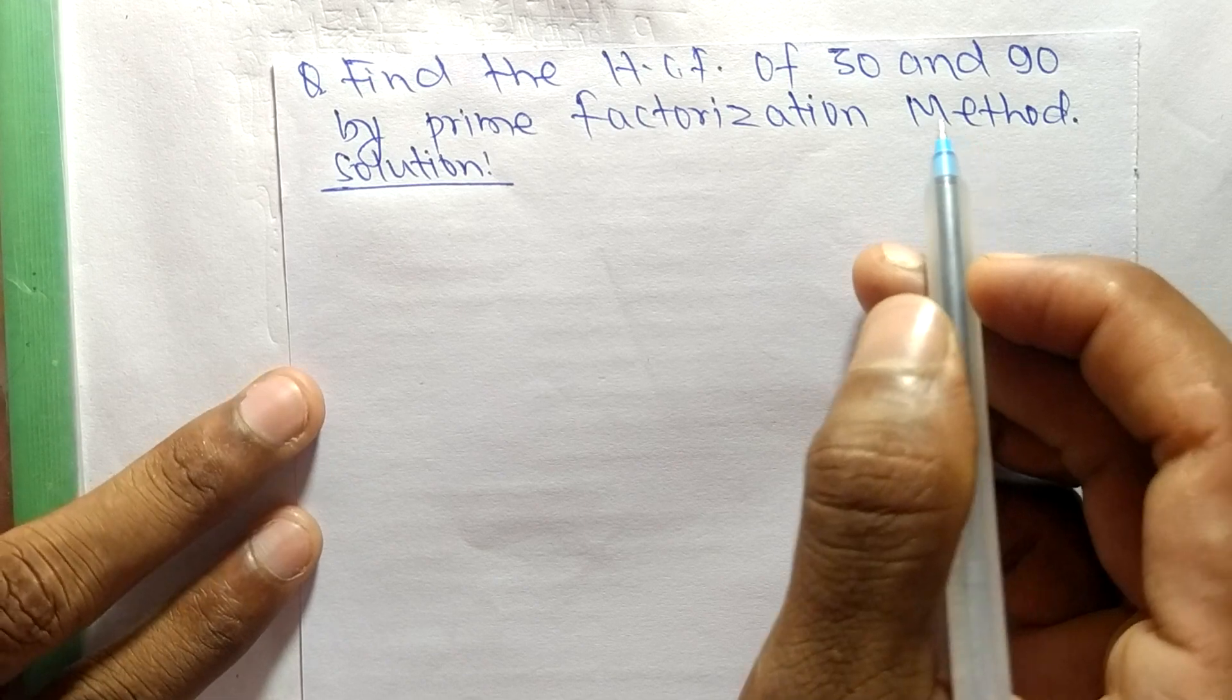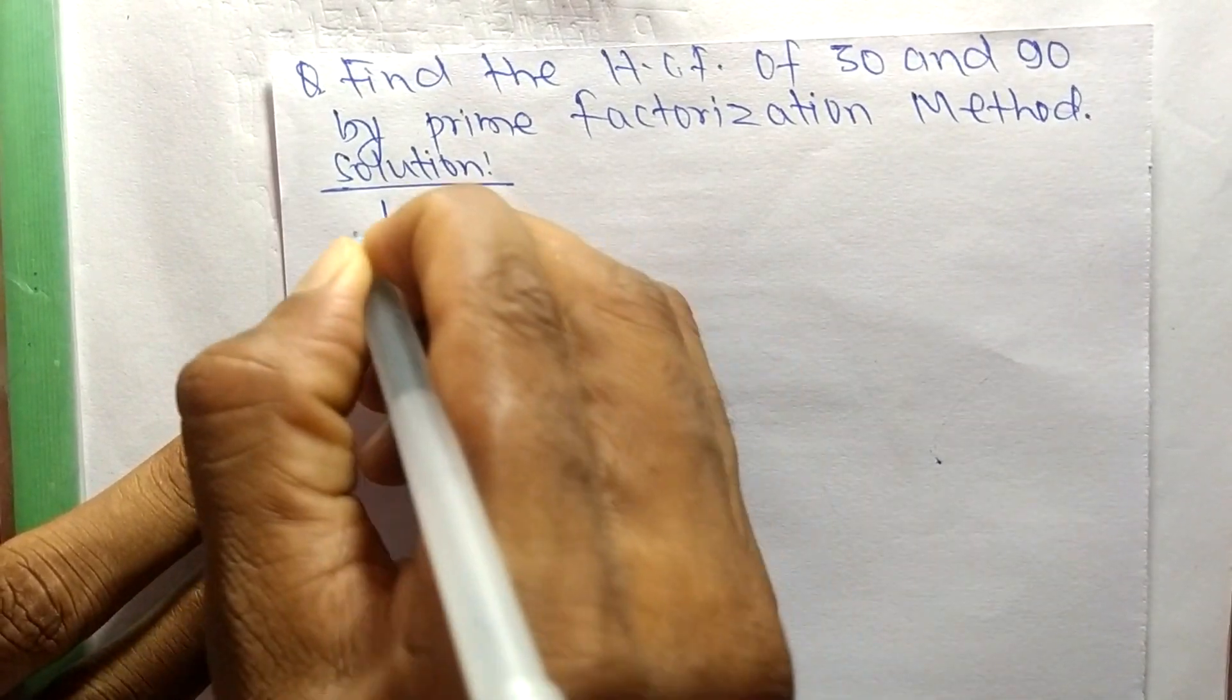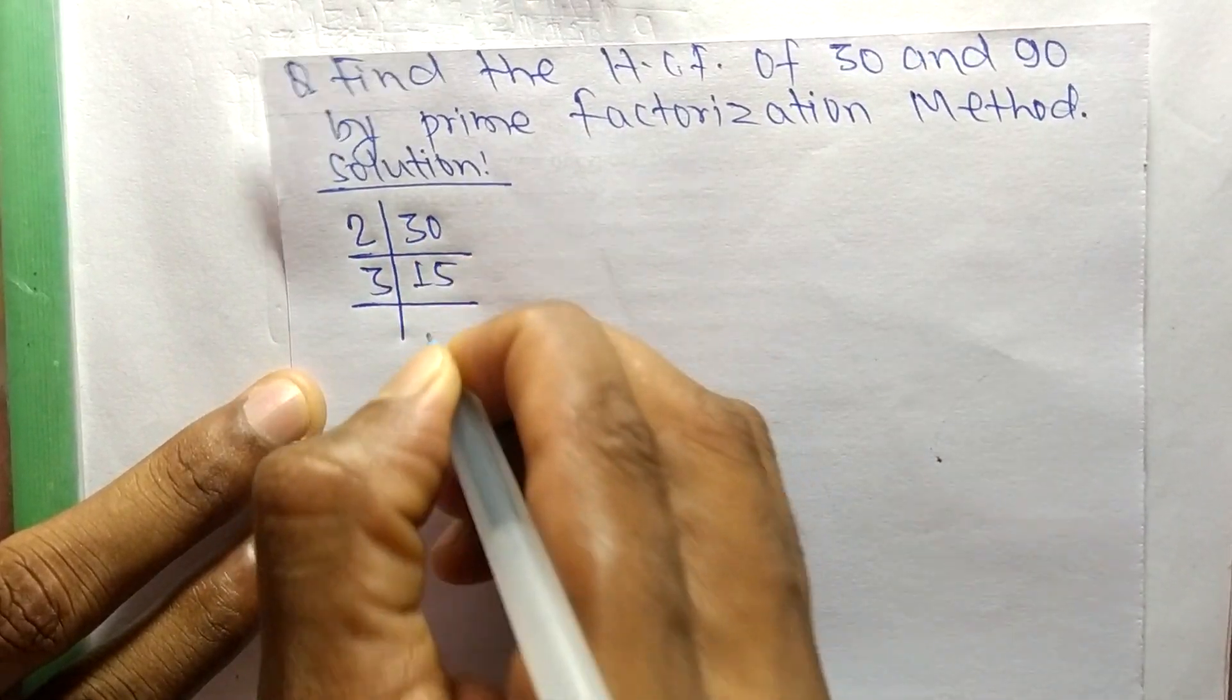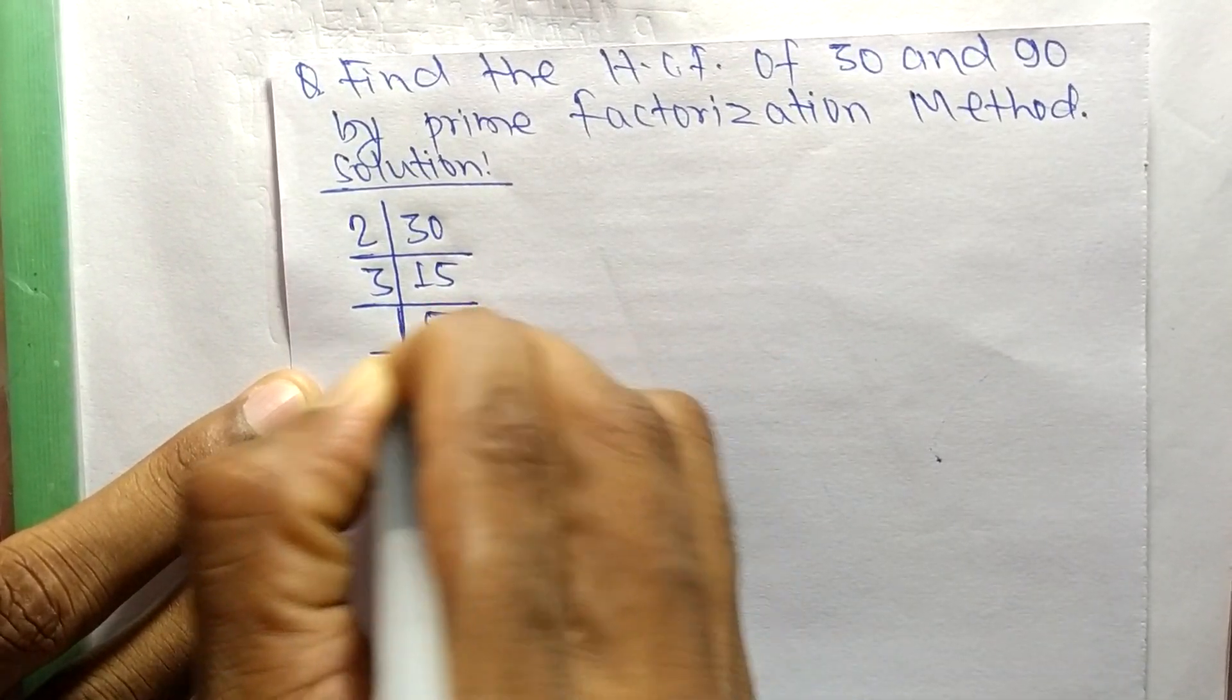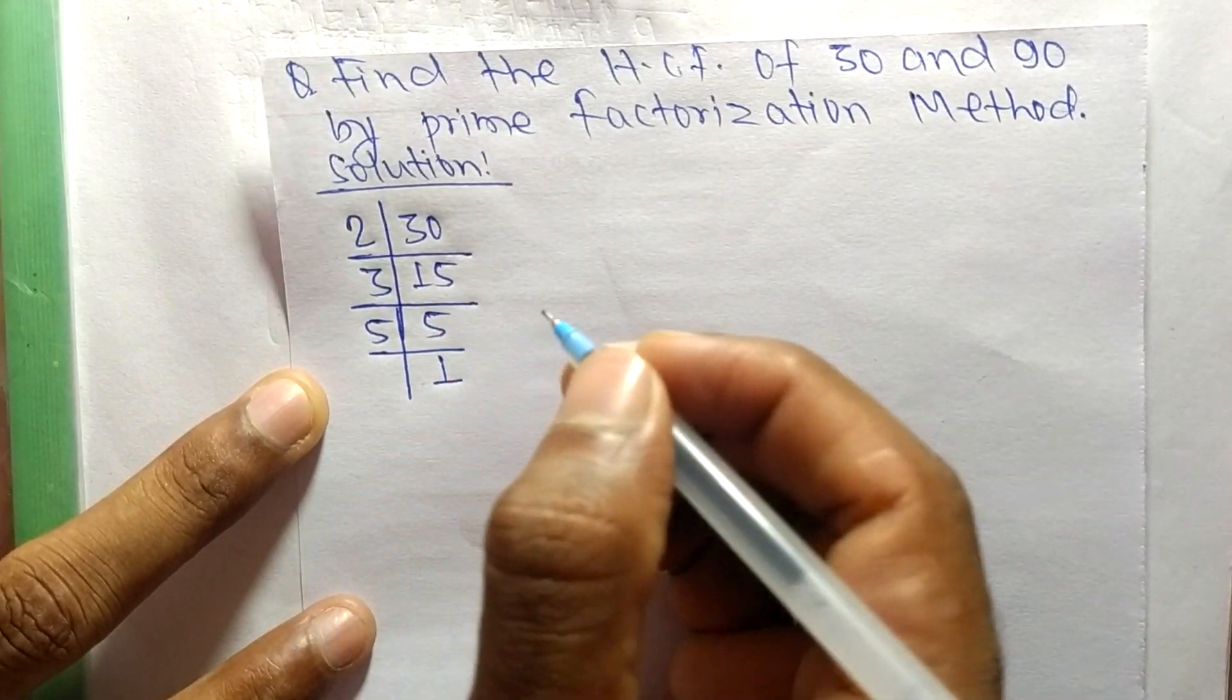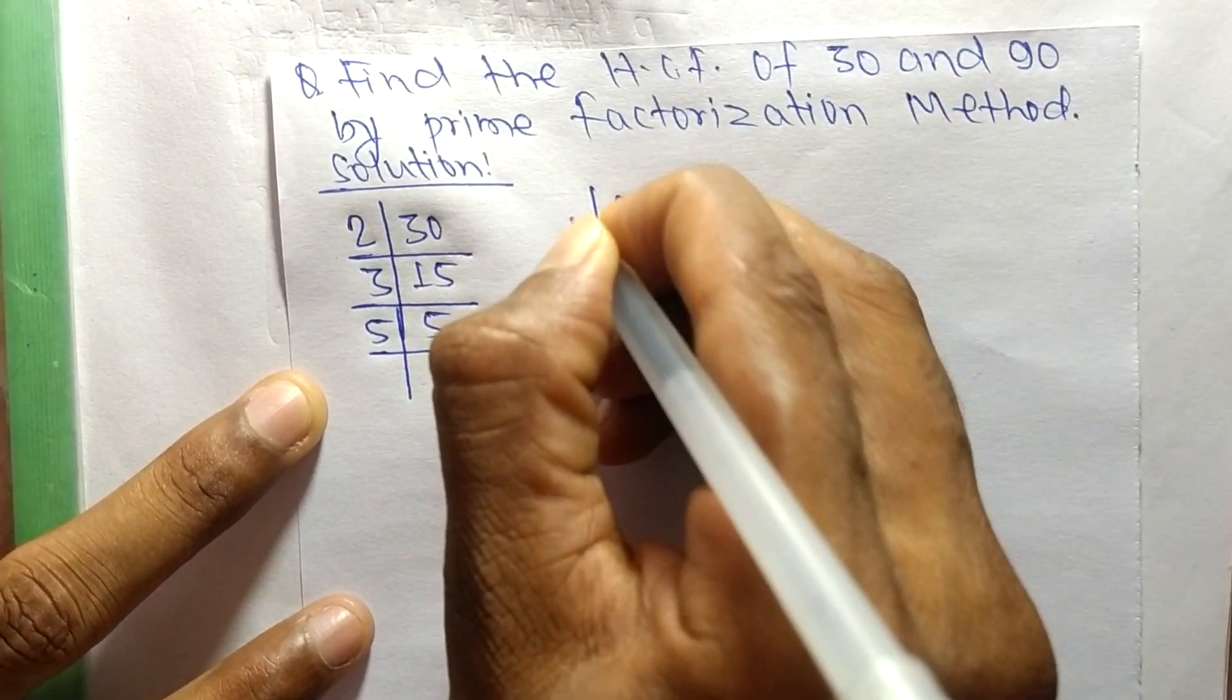First, we find out the prime factors of 30. So it is 2 times 15 equals 30, 3 times 5 equals 15, and 5 times 1 equals 5.